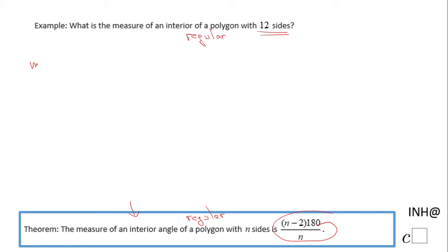The measure of one angle, which I'm going to call measure of angle 1. We have 12 of them, right? We need to use this formula where n is nothing else than 12. n stands for the number of sides.